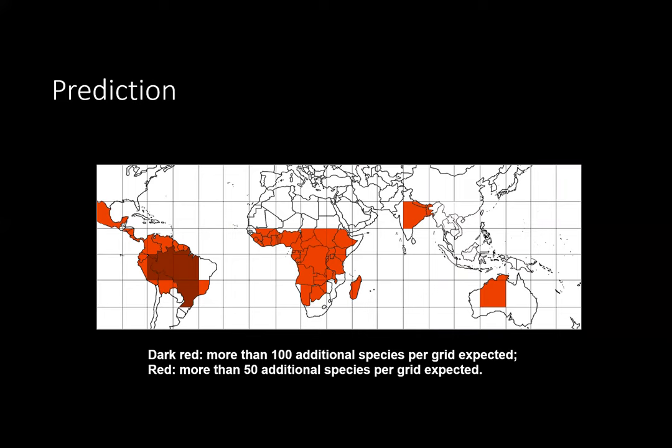This prediction was made based on the evaluation of how well certain areas are known and sampled, and what the natural vegetation is — with some vegetation types yielding more Trypetheliaceae than others.